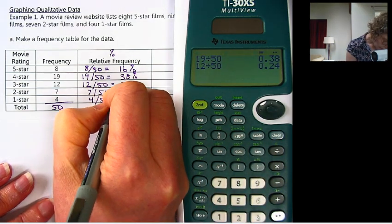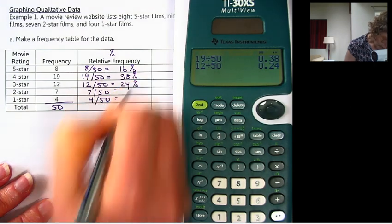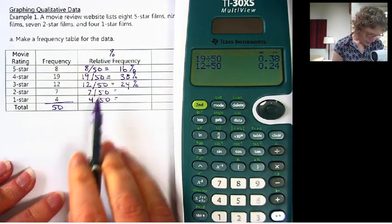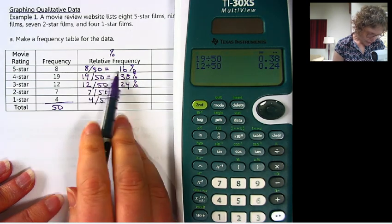12 out of 50 is 24%. There's a cool pattern going on here because it's 50. Because it's out of 50, we're doubling the number. Did you notice that?